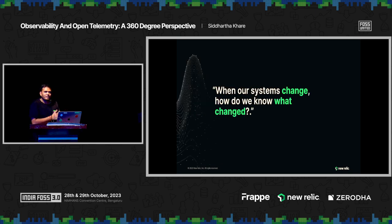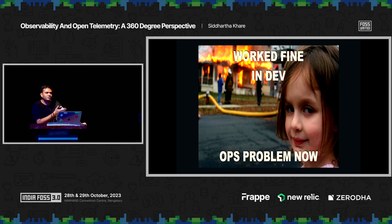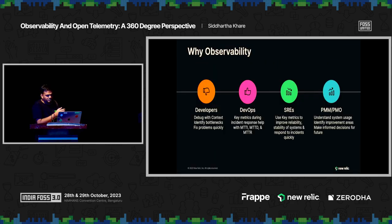Observability is all about how your systems are performing based upon the output which it generates. I hope everyone is aware about this particular scenario where everything works fine in my dev environment, but as soon as I ship it to production, it starts failing — and that's where we call it an ops problem. Even in current scenarios, I have seen people saying that it is working fine in my container. But that is not the case, and that's where observability comes to rescue.